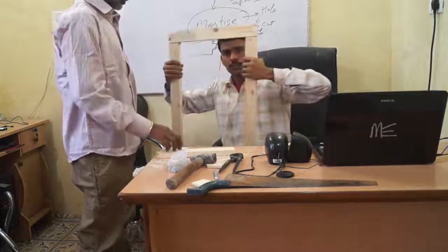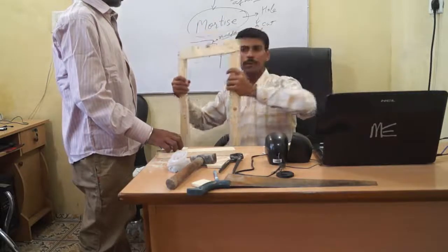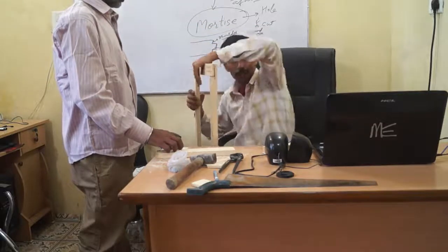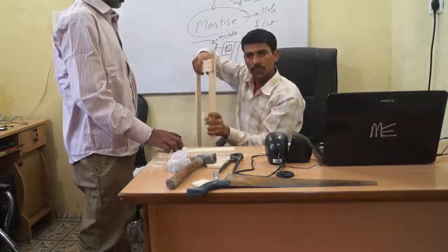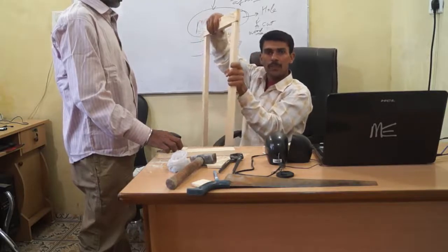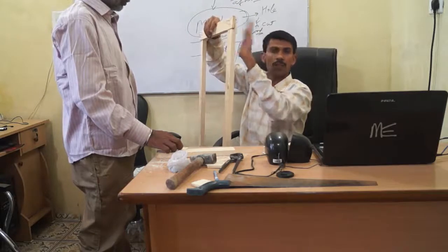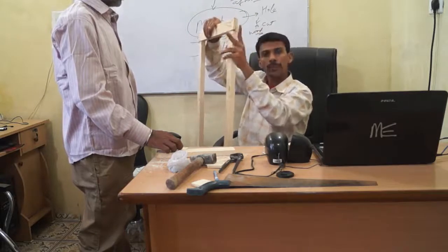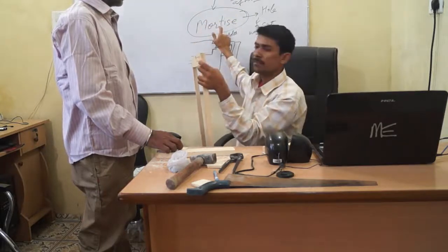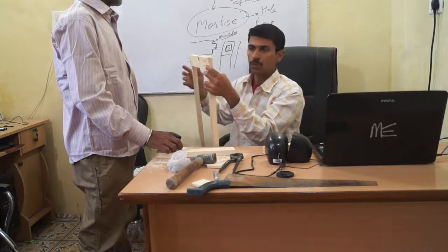It will not go at this point and also not go at this other point. When we apply pressure it will not be loose. So this is a lock with the help of mortise. This is what we are teaching to you.